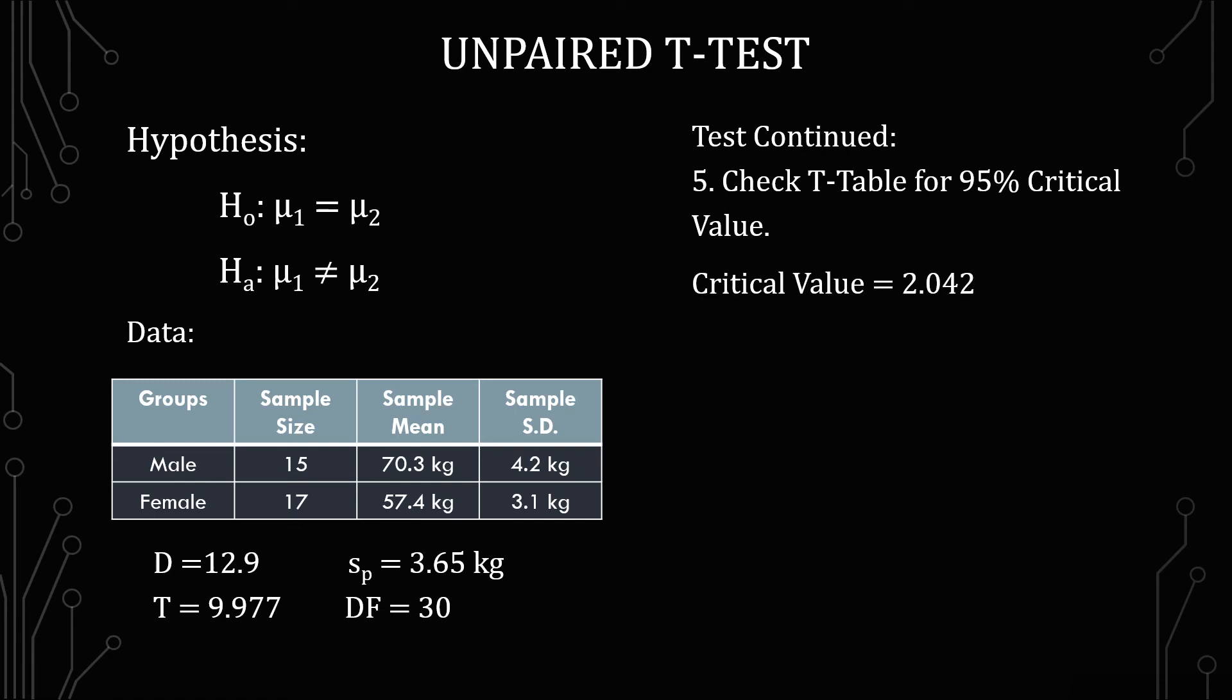The next step is to compare that critical value to our calculated value. Now when it comes to positives such as what we have here we have a positive 2.042. We're looking for anything greater than it is a statistical significance. If it was negative 2.042 it would be anything less than. So if it was negative 9.977 that would be less than.